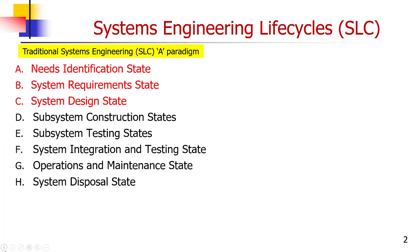Before I talk about Object-Oriented Systems Engineering, the traditional systems engineering lifecycle starting in the A paradigm begins with identifying the needs, developing the system requirements, designing the system and subsystems, constructing the subsystems, testing the subsystems, integrating and testing the system, transitioning into operations, operations and maintenance, and then disposal.